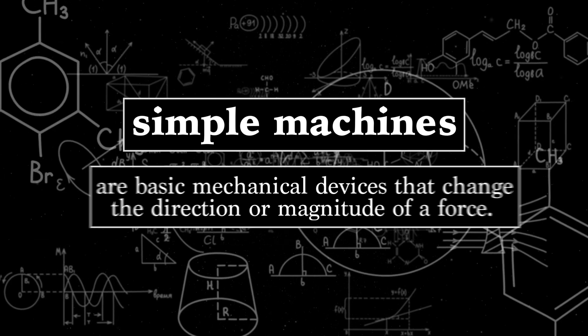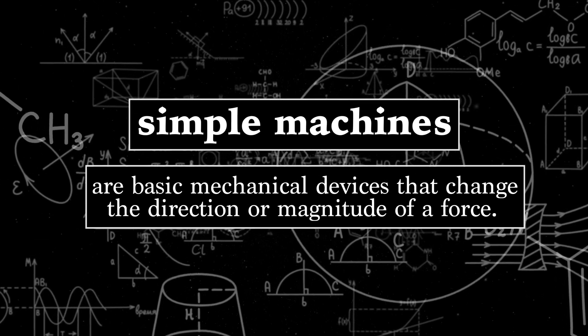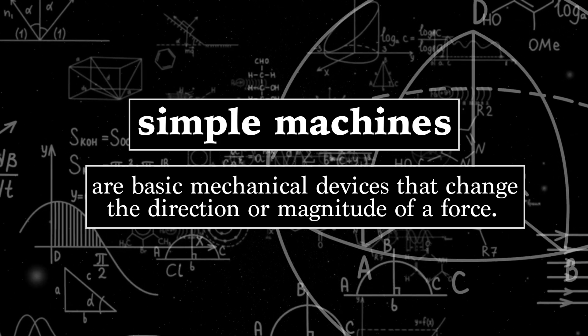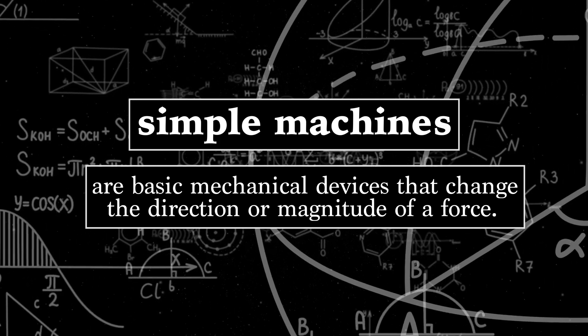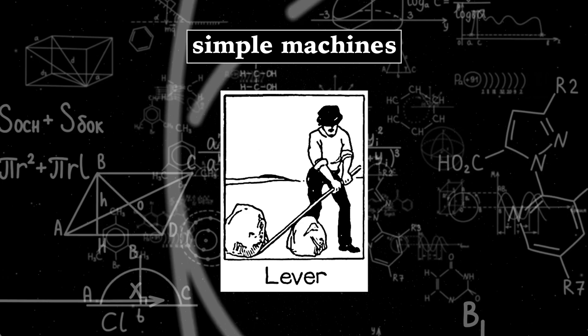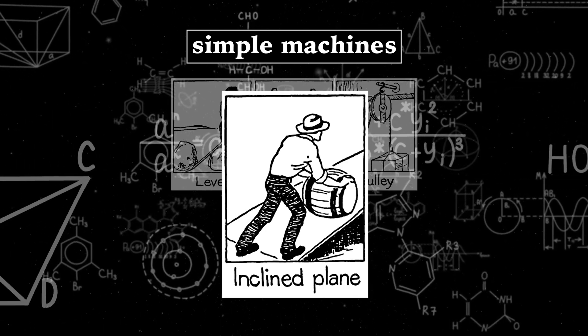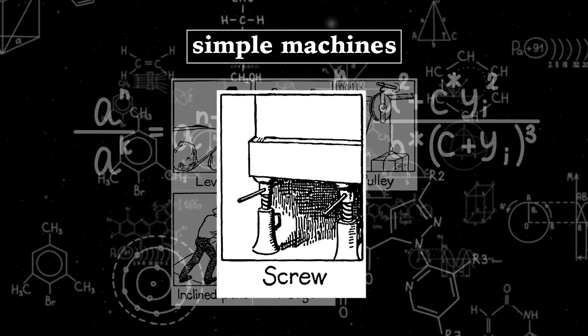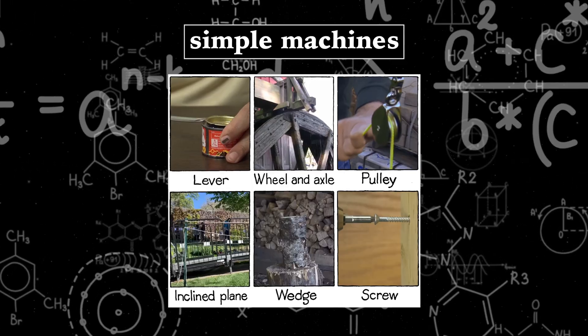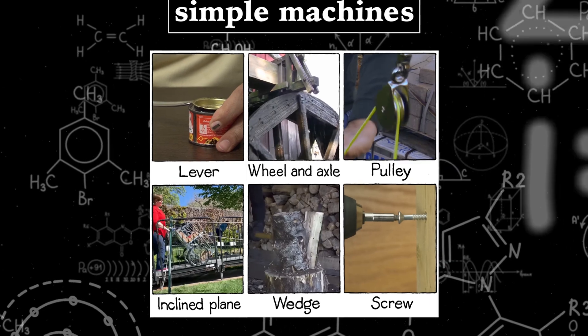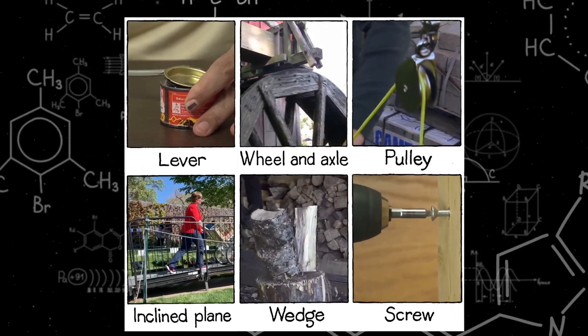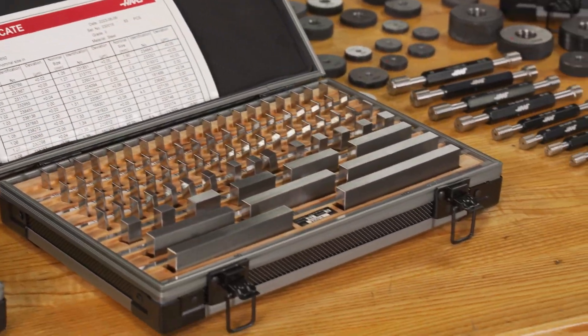In the world of physics, a simple machine is a basic mechanical device that changes the direction or magnitude of a force, like a lever, wheel and axle, pulley, inclined plane, wedge or screw. Simple, yes, with few or no moving parts, but absolutely revolutionary, just like our simple gauges.